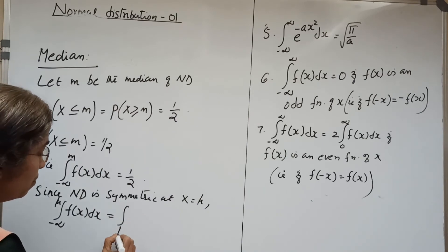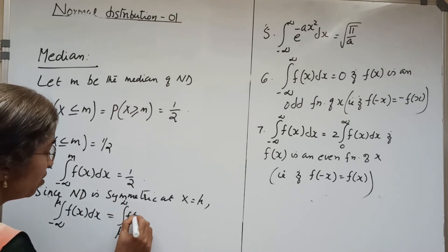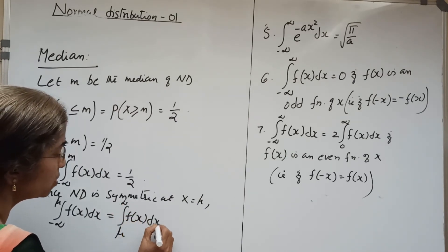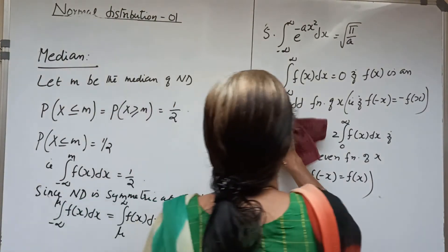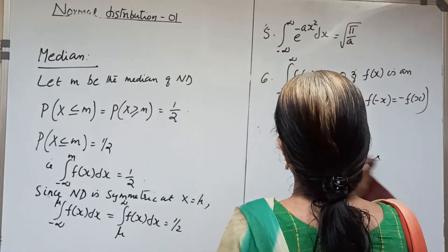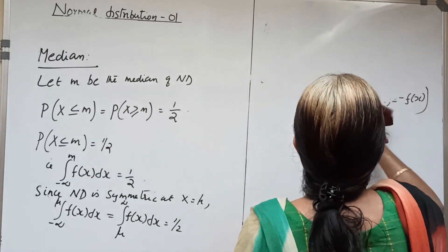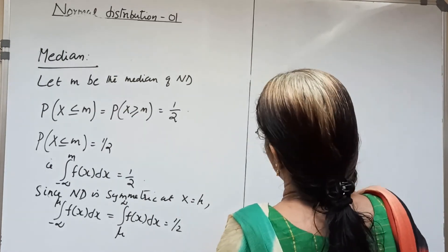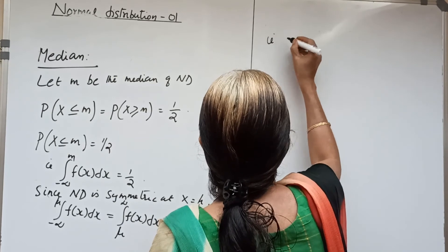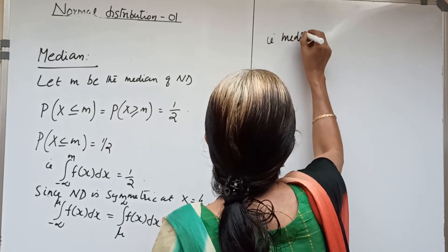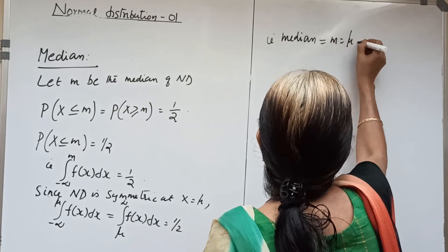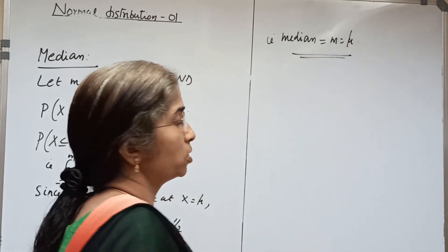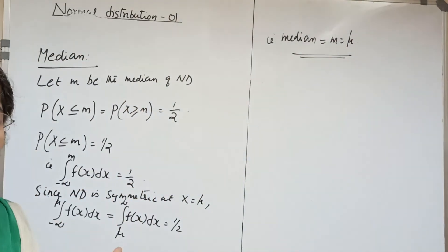From the integral, dx equals 1 by 2. Since the normal distribution is symmetric at mu, we get median equal to mu. That is, median M equals mu. Hence we have the two results: mean equals mu and median equals mu.